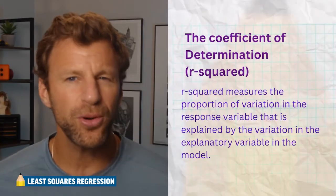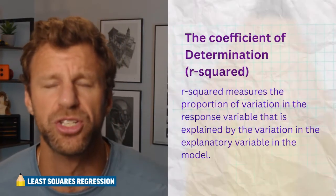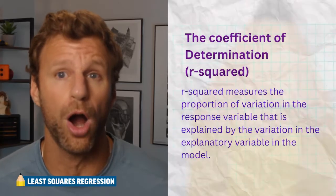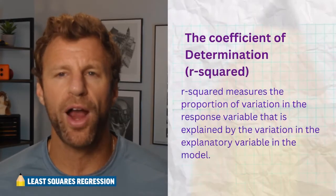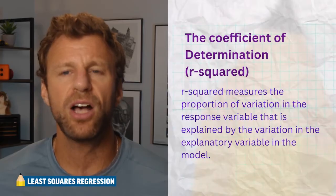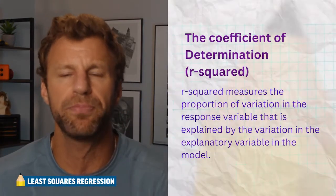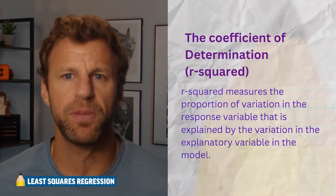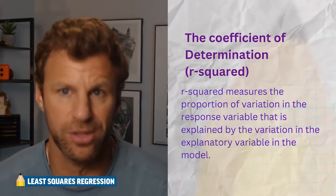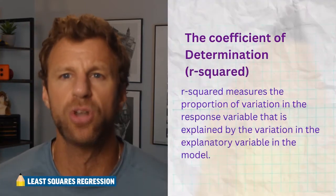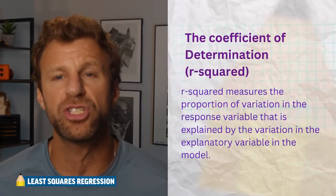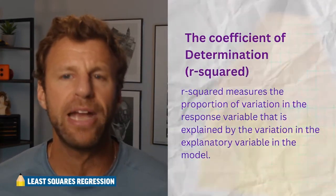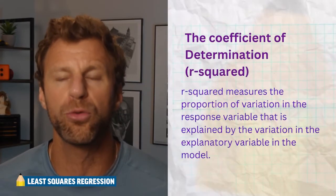Another super important value is the coefficient of determination. This is literally taking correlation r and squaring it — correlation squared. What r-squared tells us is actually super important: it tells us how well these two variables are connected. It gets turned into a percentage, so when we have r-squared as a decimal, we move the decimal point two places. The r-squared value tells us the percent of variation in the response variable that is actually explained by the variation in the explanatory variable through the regression model.